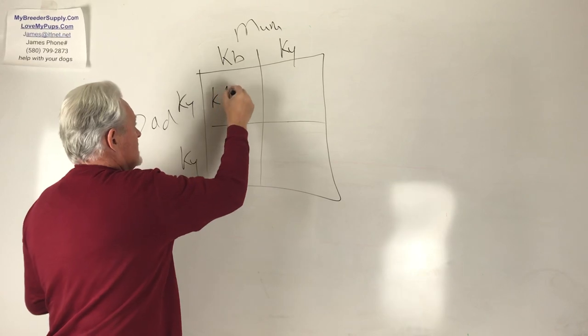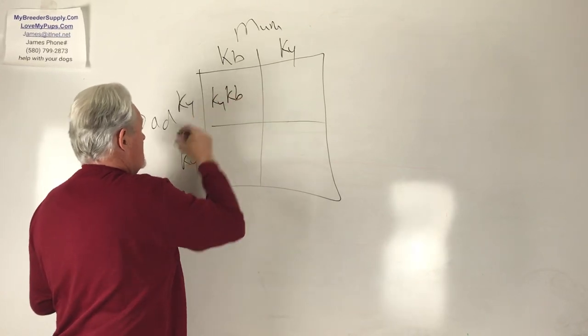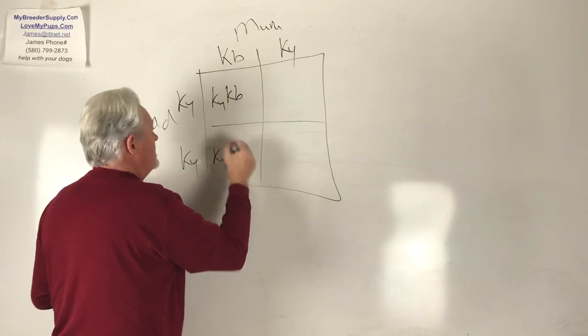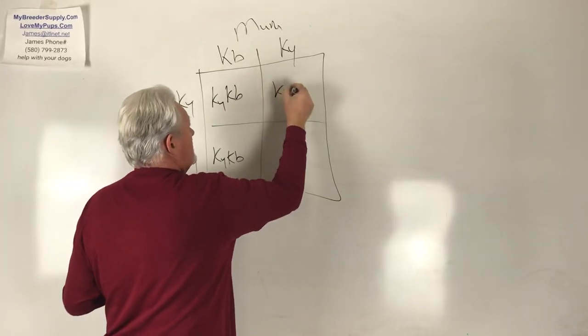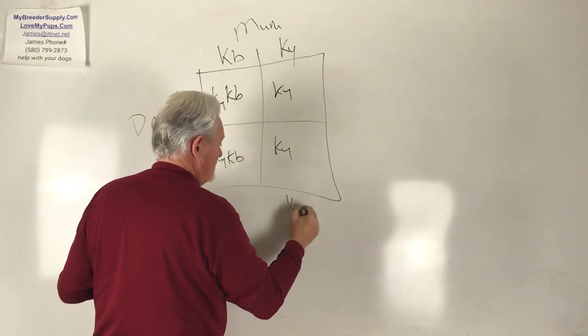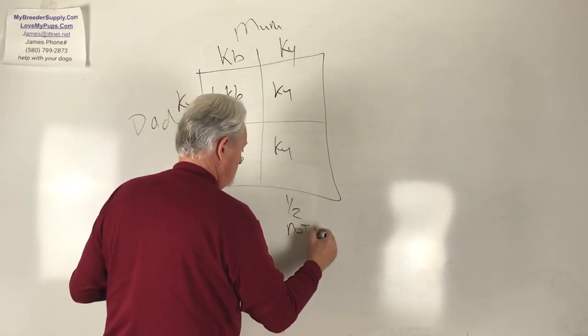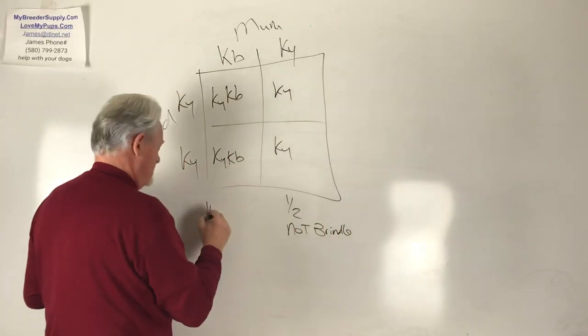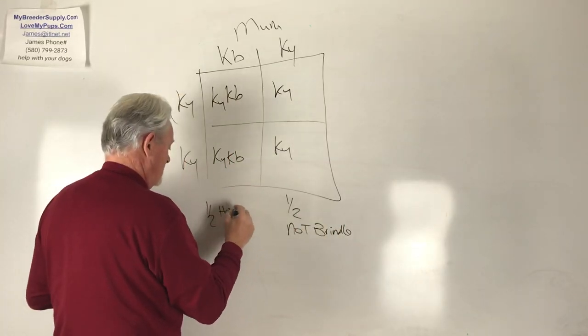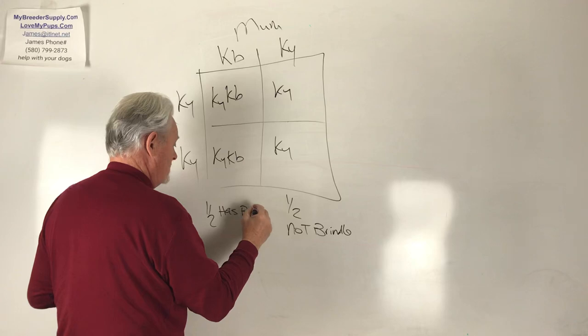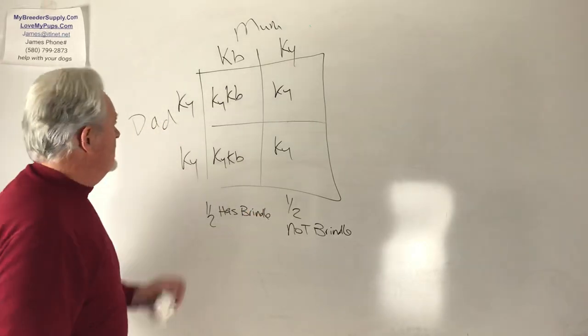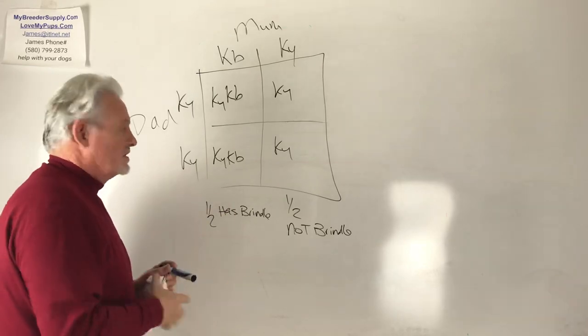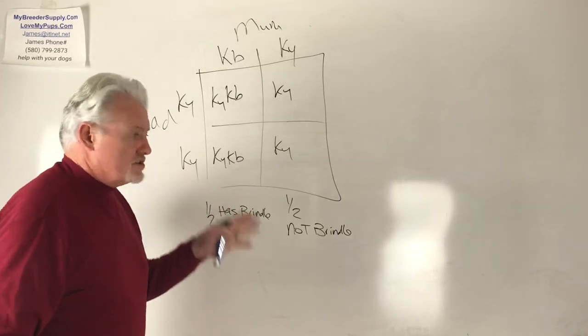So we look at the Punnett square. What do we get? Well, we get a KY, KB here. And we do the same thing here. We get a KY, KB here. And we get a KY, KY, KY. So half the litter is not brindle. And half the litter has brindle. Remember it just takes one copy of brindle for it to show up. So there you go. If you breed a non-brindled dog to brindled dog, you can expect half the litter to show brindle.